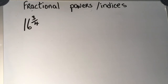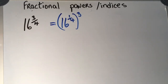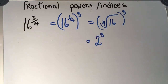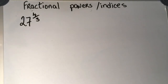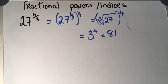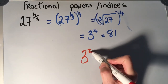Now find the value of 16 to the power of 3 quarters without a calculator. Pause the video and try it. The 3 quarters means I write it as 16 to the power of 1 quarter, all raised to the power of 3. To the power of 1 quarter means the fourth root of 16 — what multiplied by itself 4 times gives 16? That's 2. So we have 2 to the power of 3, which is 8. Note that 3 to the power of 4 can be broken down as 3 squared, all squared, using the rules of indices.